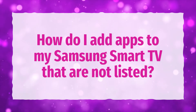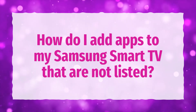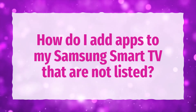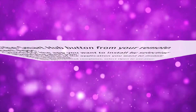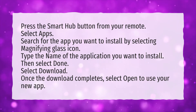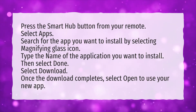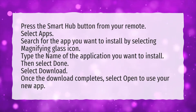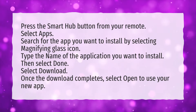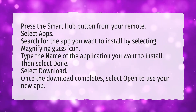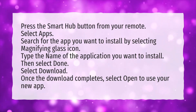How do I add apps to my Samsung Smart TV that are not listed? Press the Smart Hub button from your remote. Select Apps. Search for the app you want to install by selecting the magnifying glass icon.